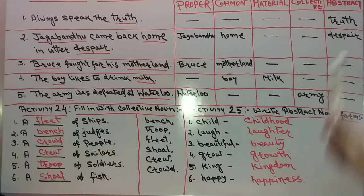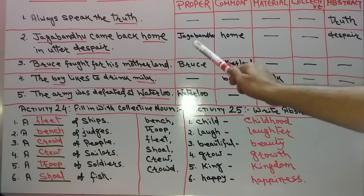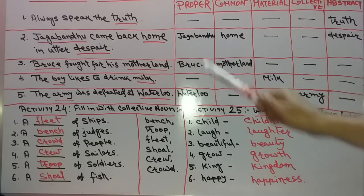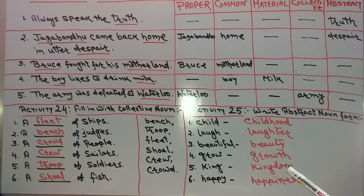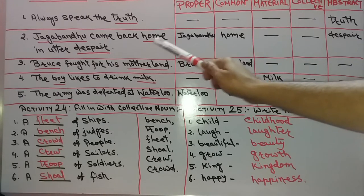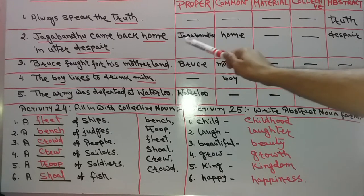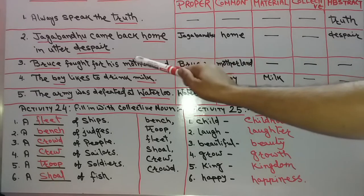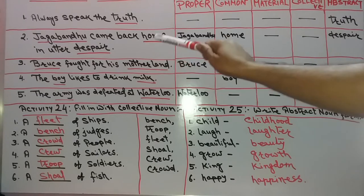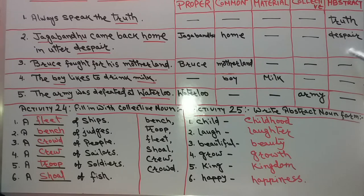Truth is abstract noun. Number 2: Jagabandhu came back home in utter despair. Jagabandhu is a proper noun. Home is a common noun. And despair — despair means hataasha — despair is an abstract noun.